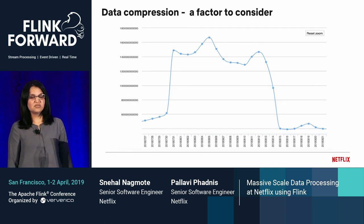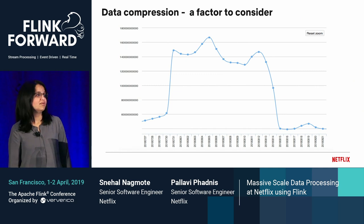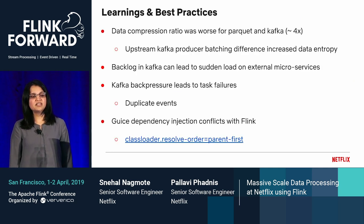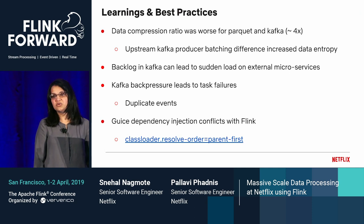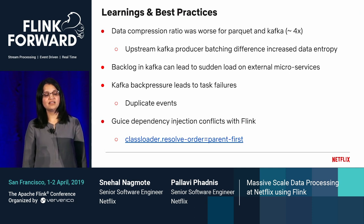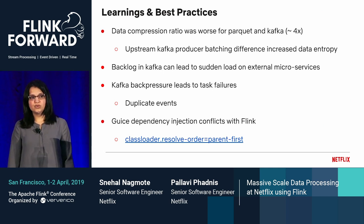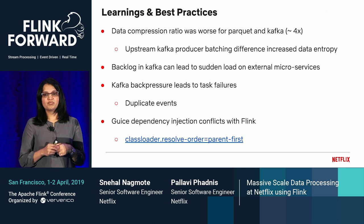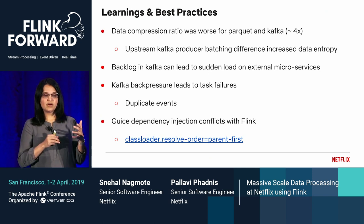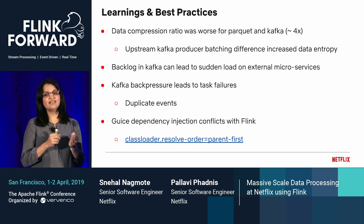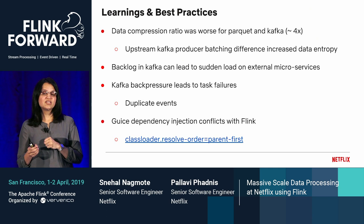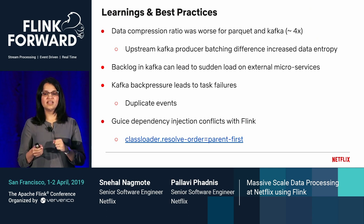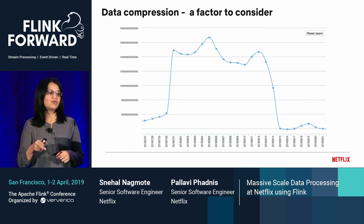Data compression is also a factor to consider — something we didn't anticipate before. When we migrated from our legacy pipeline to the Flink-based platform, we noticed the data compression ratio was worse in Kafka — four times worse — and also in Parquet format in the data warehouse. It turned out this was due to upstream Kafka producer batching differences. The upstream Kafka producer batching mechanism changed, increased data entropy, and led to worse compression. After fixing the batching mechanism upstream, the compression ratio improved and the compressed volume came back down.